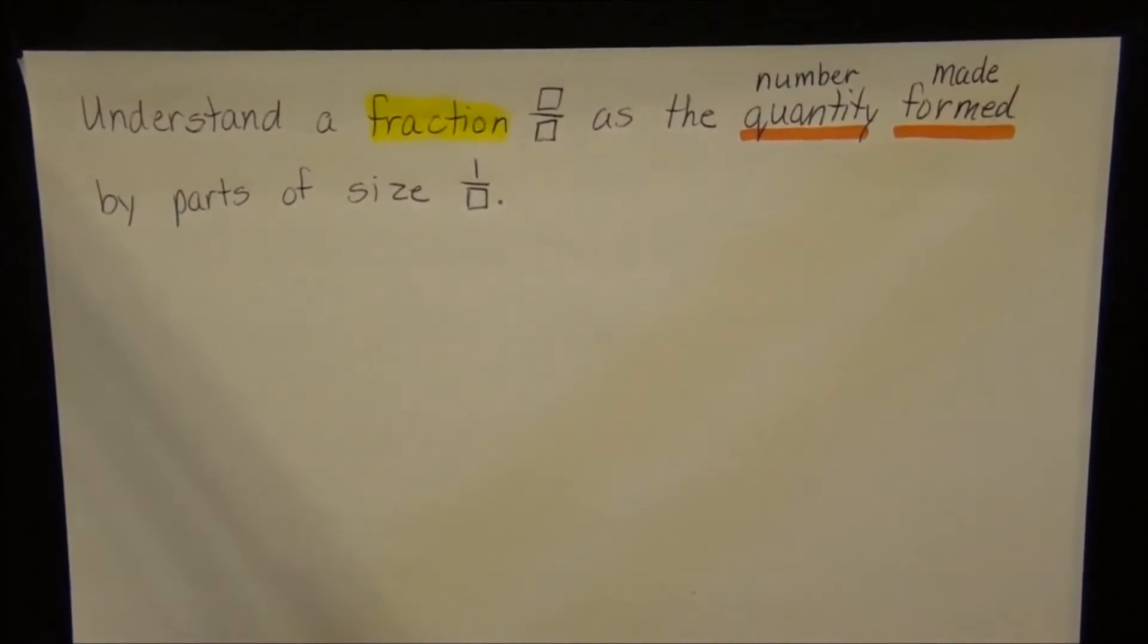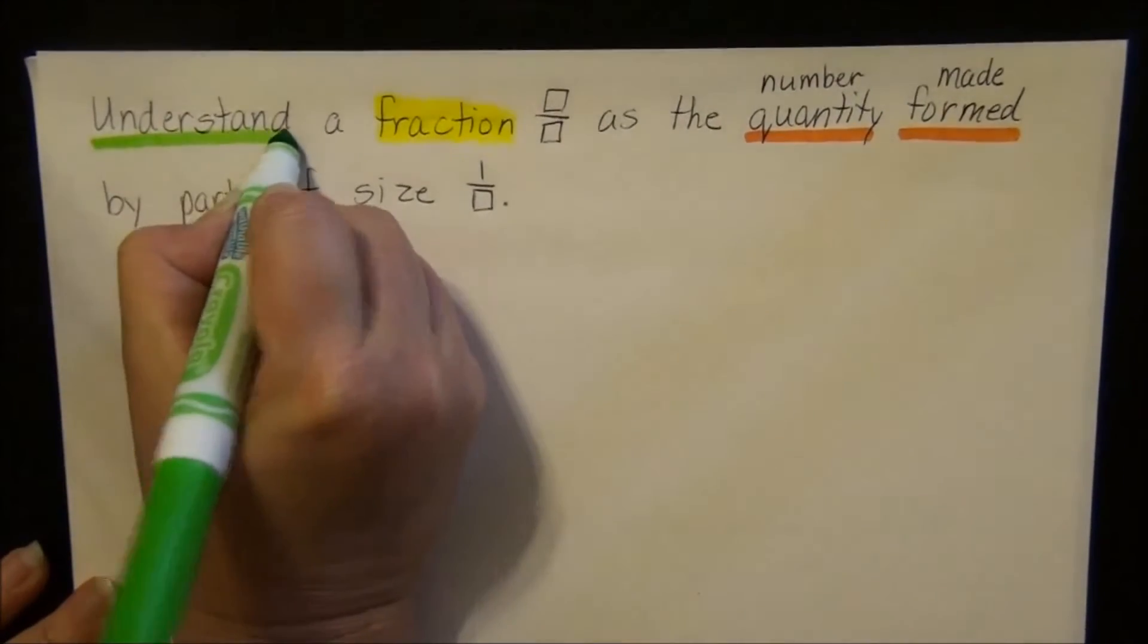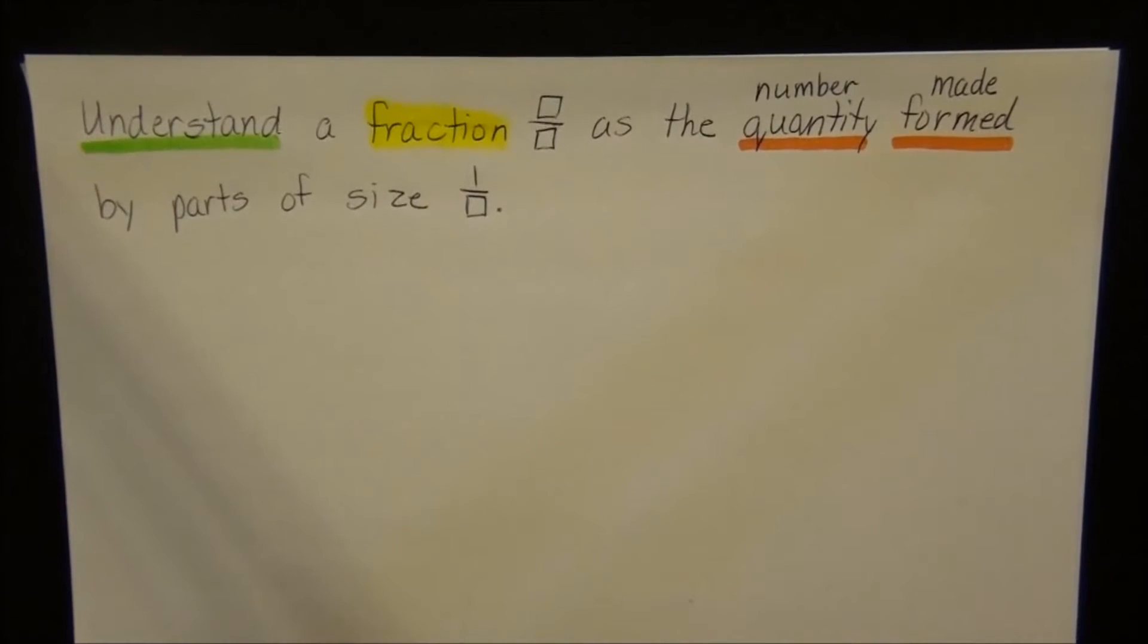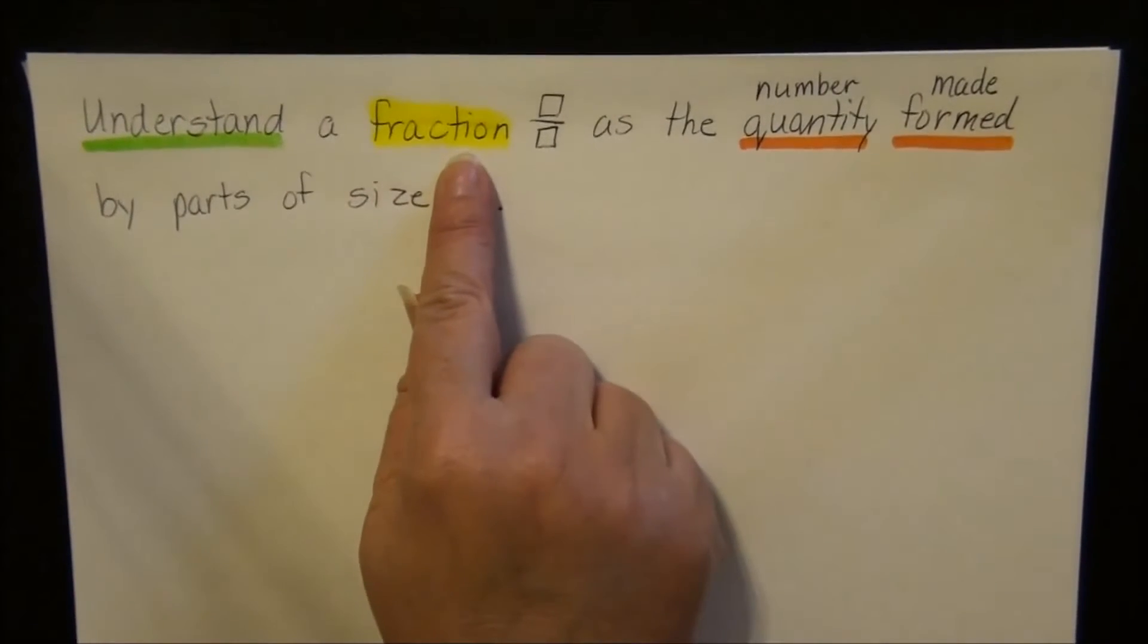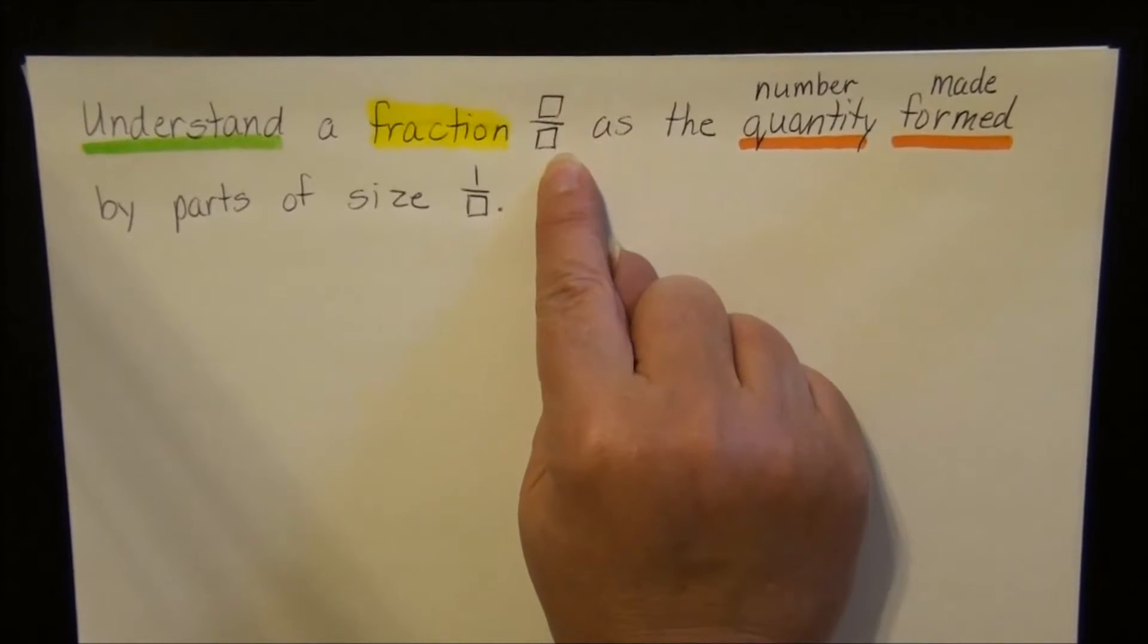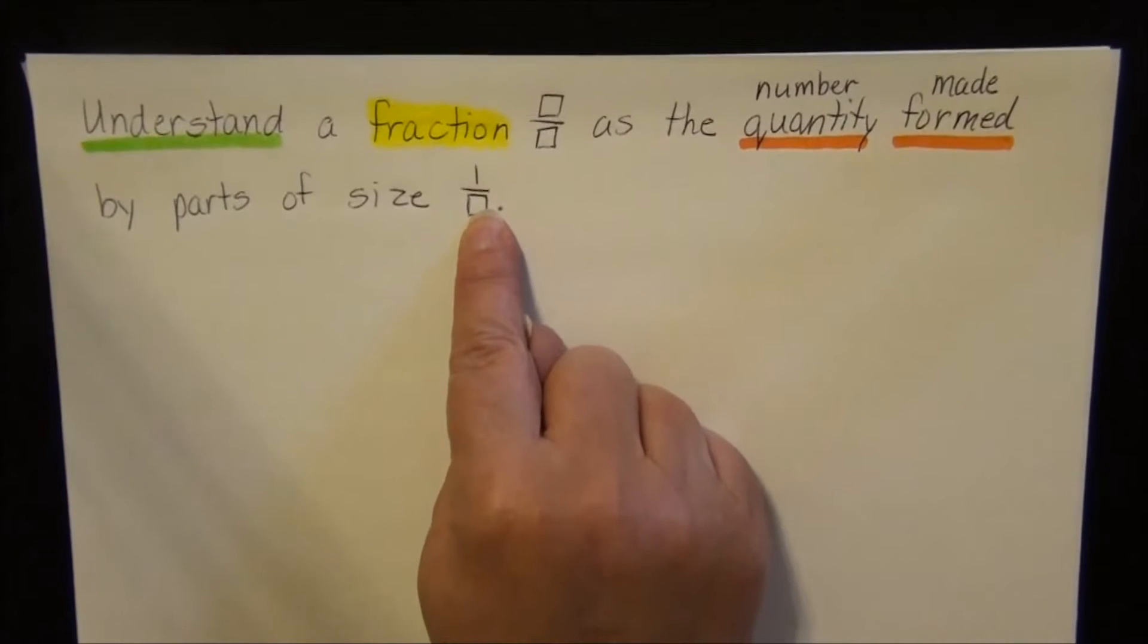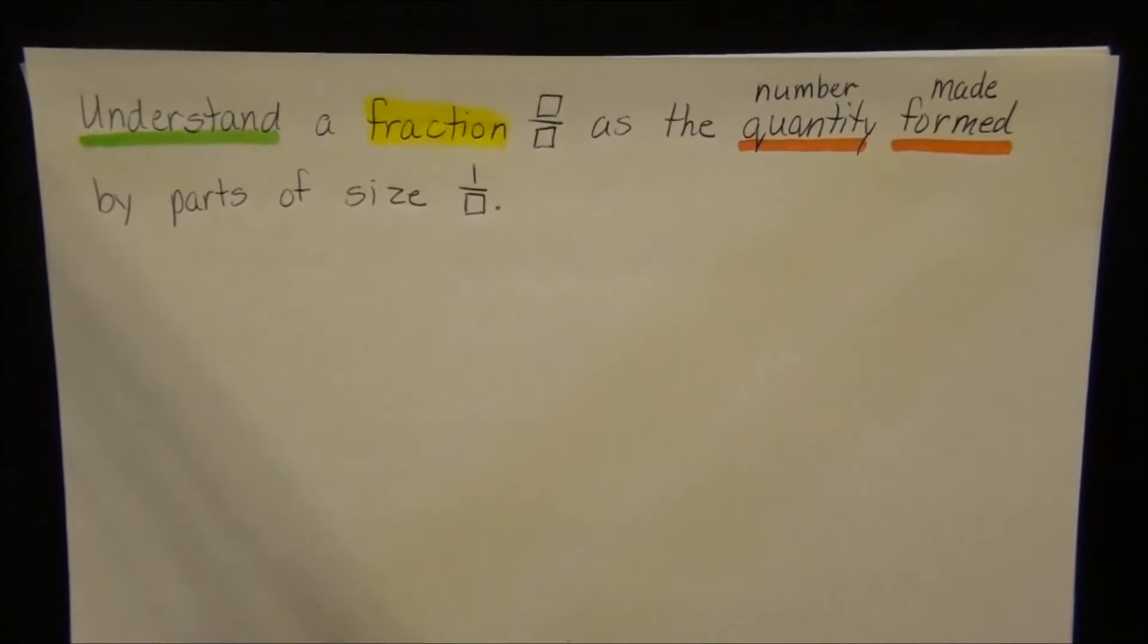We also want to find our action word, what is it that we need to do. And our action word is understand. Now like I told you yesterday, I can't walk up to you and say yes, you understand. I need to look at what you do to see if you understand. So that's what you're going to show me in class, is that you understand that a fraction is blank over blank, as the number made by parts of size 1 over blank. And this 1 over blank thing, we are going to talk about in just a second.